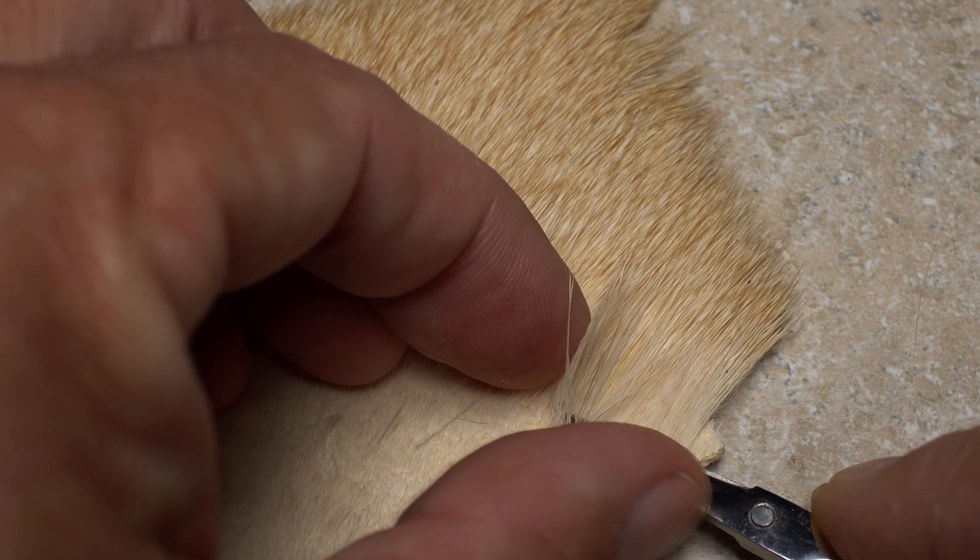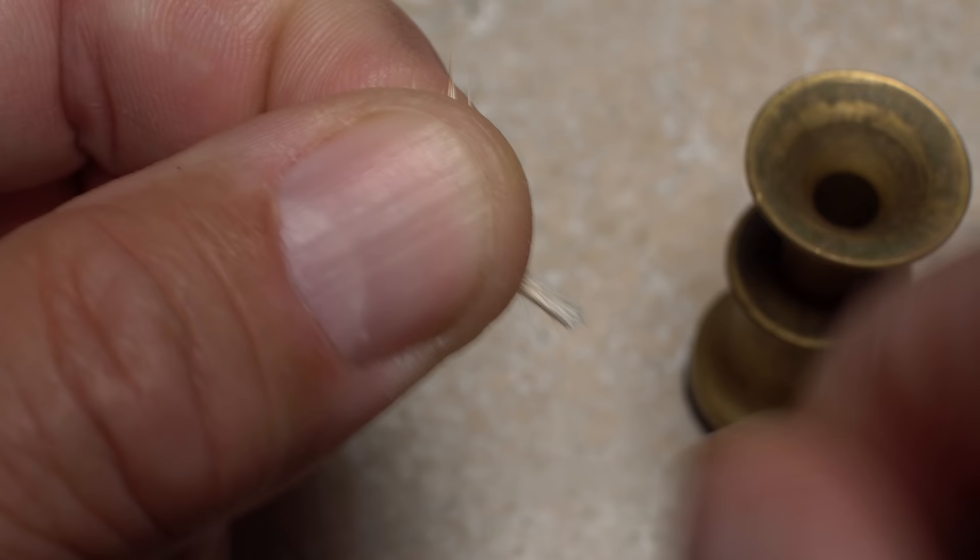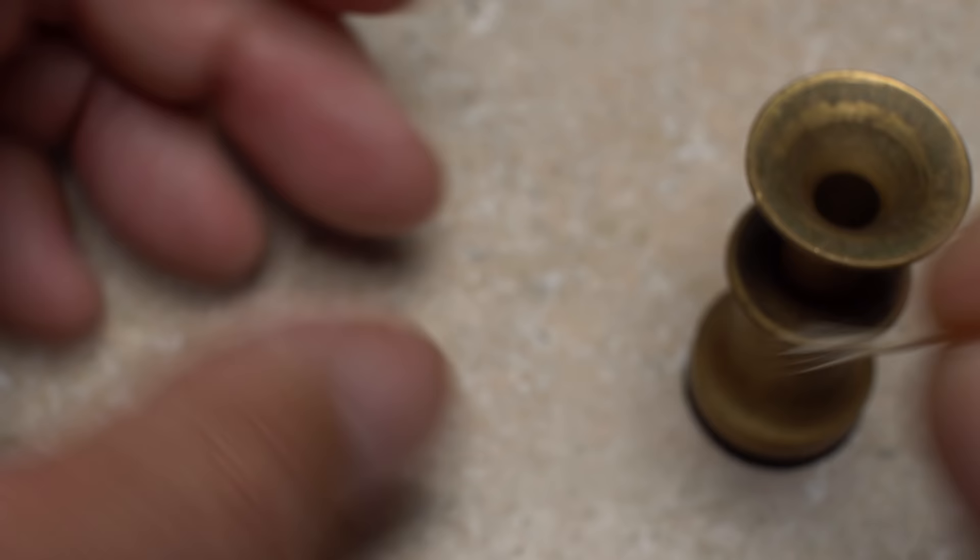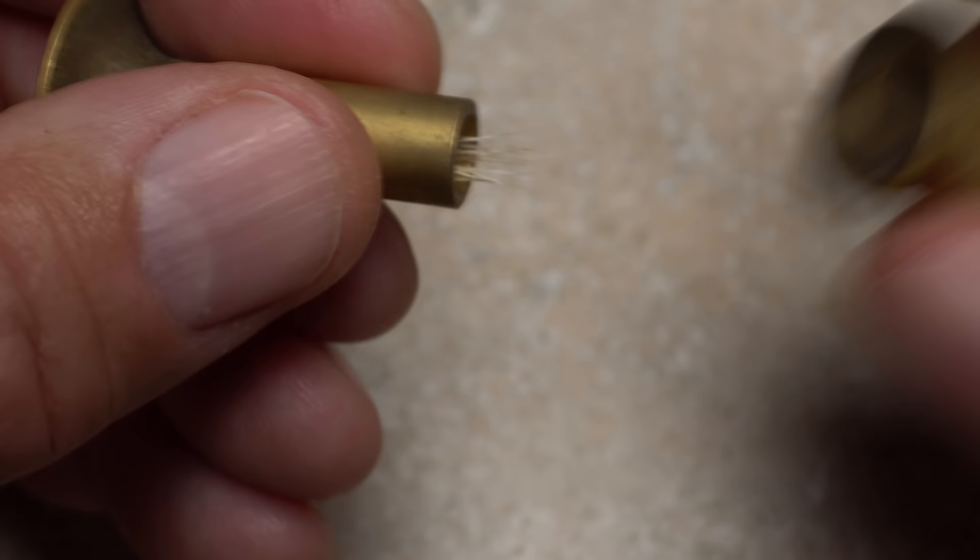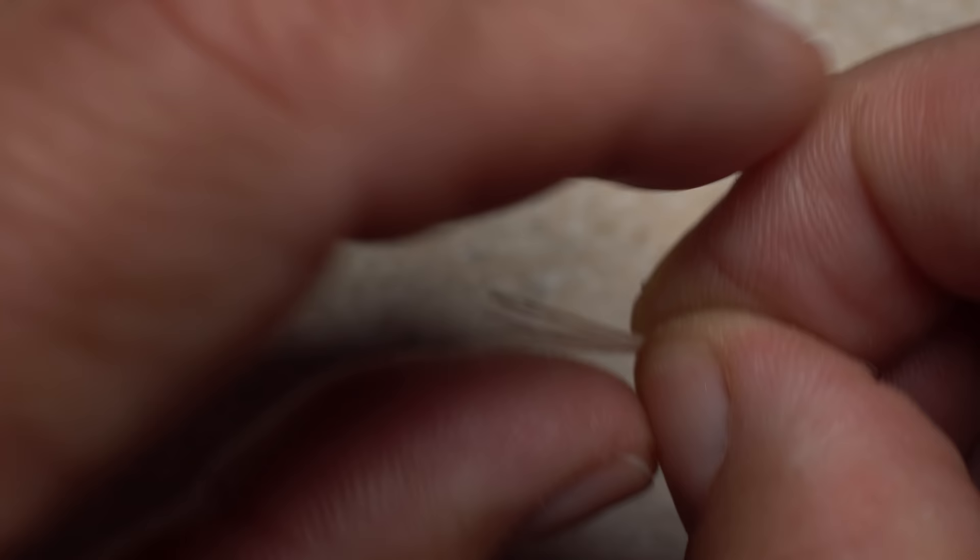Bleached elk or deer hair is used to form the back and the antennae of the fly. Snip only eight to ten hairs free from the hide then strip out all the fine under fur. Although not essential I do like to stack the hair in my hair stacker to make sure the tips are completely aligned. Remove the hair from the stacker with your right hand and then pass the hair to the fingertips of your left.